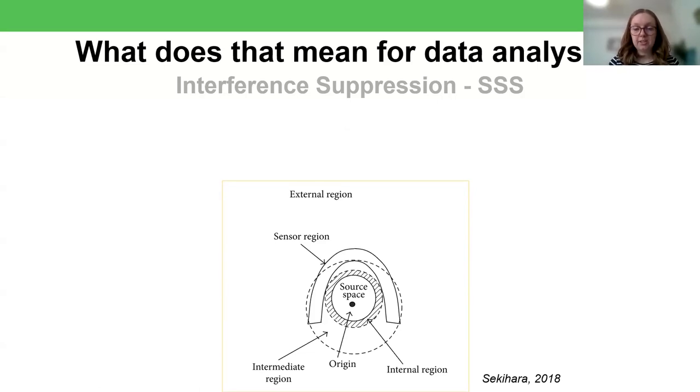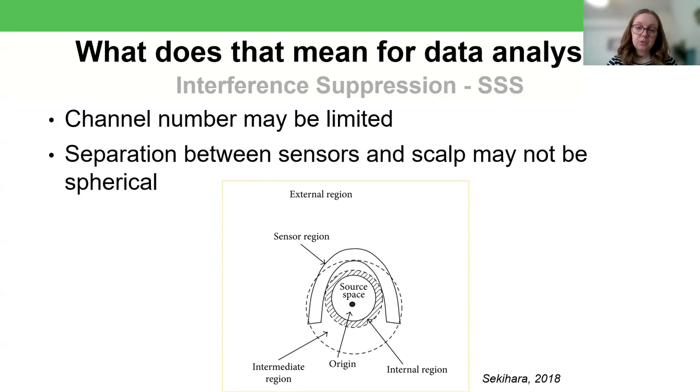SSS is a method frequently used in cryogenic MEG to separate external interference from the brain signal of interest. And this is done by modeling both the external interference and the internal brain signals with functions called spherical harmonics. And you can think of it as placing a sphere in between the brain and the sensors. And anything that comes from within that sphere is modeled as being from the brain. And anything that comes from outside of that sphere is modeled as being external interference and can be ignored. And so you only keep the model of the internal space. But this often isn't ideal for OPMs for a couple of reasons. Firstly, the channel number may be limited, and particularly the channel positions may not be optimal. But SSS is a method that really relies on spatial oversampling.